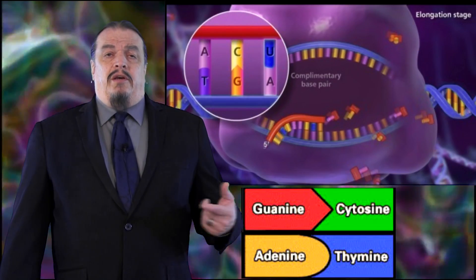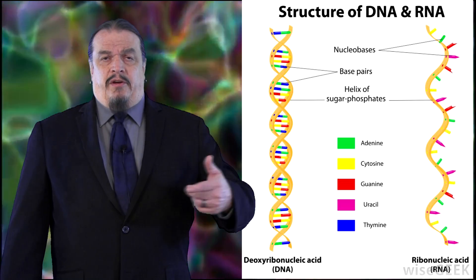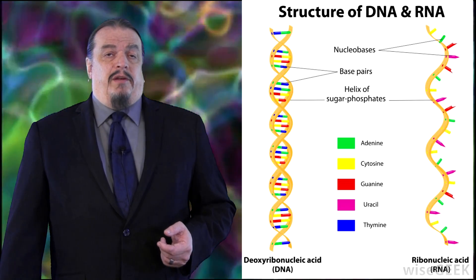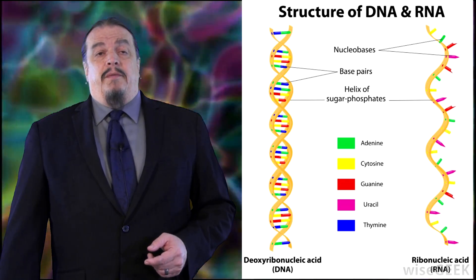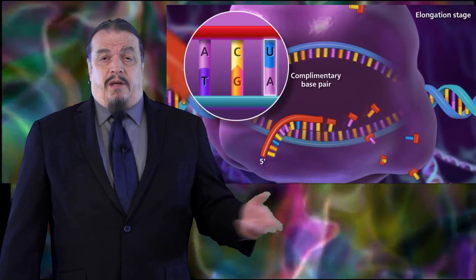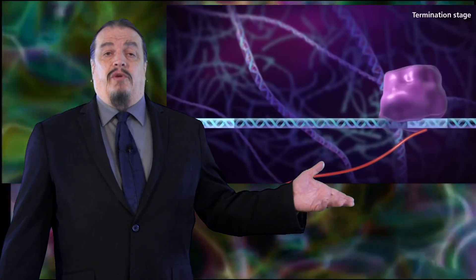Note that guanine always binds with cytosine and adenine with thymine, except that RNA uses uracil instead of thymine. So adenine binds with uracil in RNA and with thymine in DNA. But when it's translated later on, the copy still ends up being the same configuration of amino acids. Once the polymerase reaches the terminator region, it breaks off, and now we have a new strand of RNA.